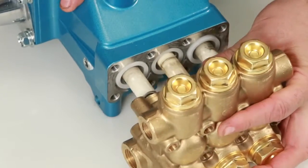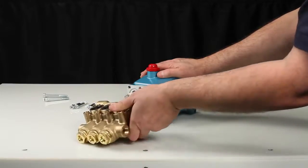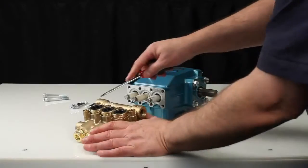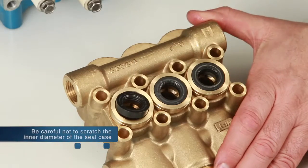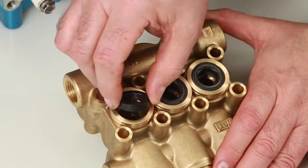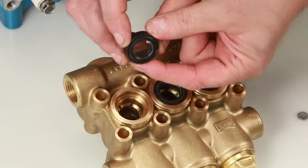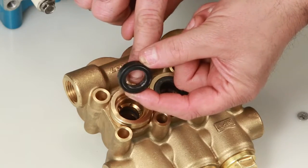Place manifold on flat surface with low pressure seals facing up. Place a flat-tipped screwdriver under the low pressure seal and pry upward to remove. Inspect the inside of the low pressure seal for wear or damage.